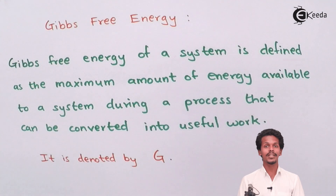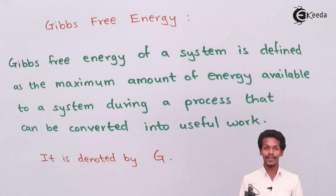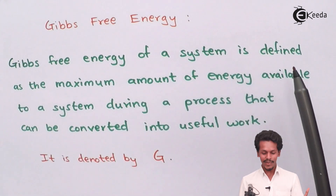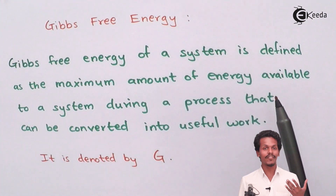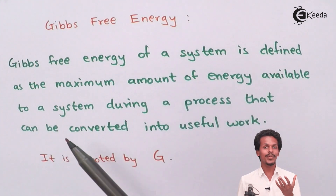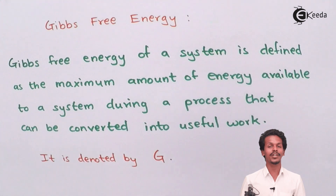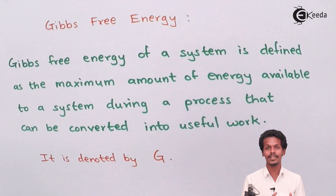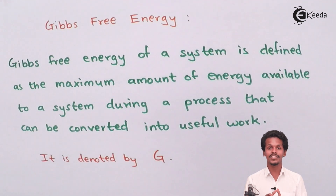We are going to learn about Gibbs free energy and understand what it is defined as. The Gibbs free energy of a system is defined as the maximum amount of energy available to a system during a process that can be converted to useful work. It is the energy available for a system to perform a particular work — that is the reason it is called Gibbs free energy.